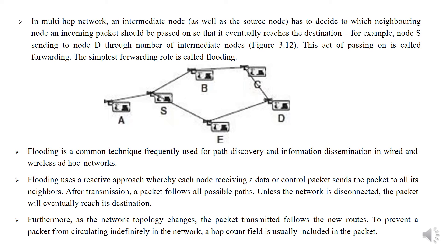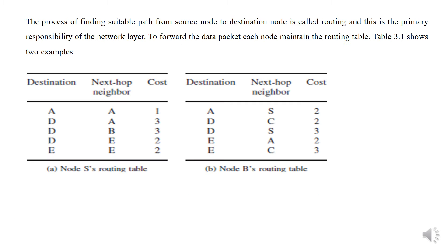After transmission, a packet follows all possible paths. Unless the network is disconnected, the packet will eventually reach its destination. Furthermore, as the network topology changes, the packet transmitter follows the new routes. To prevent a packet from circulating indefinitely in the network, a hop count field is usually included in the packet. The process of finding suitable paths from source node to destination node is called routing, and this is the primary responsibility of the network layer. To forward the data packet, each node maintains the routing table.